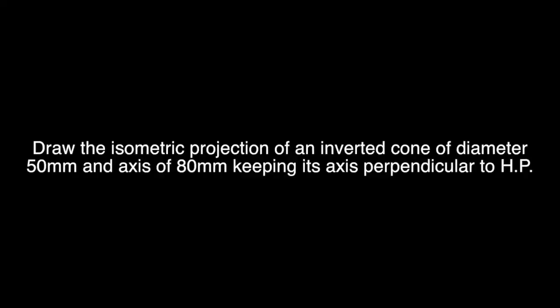So now we are doing example 24 from NCRT Engineering Graphics 12 standard book. Draw the isometric projection of an inverted cone of diameter 50 mm and axis of 80 mm, keeping its axis perpendicular to HP.